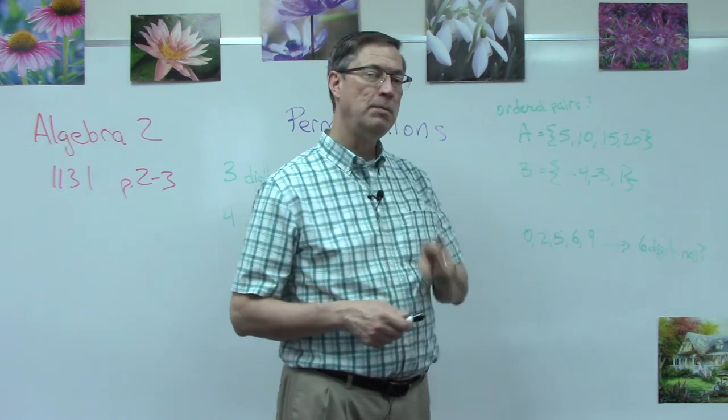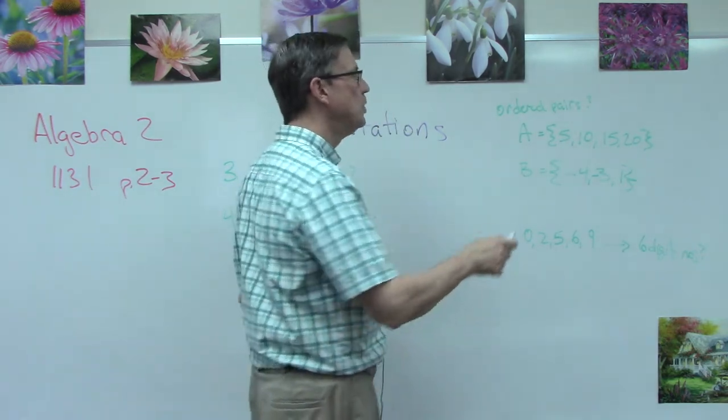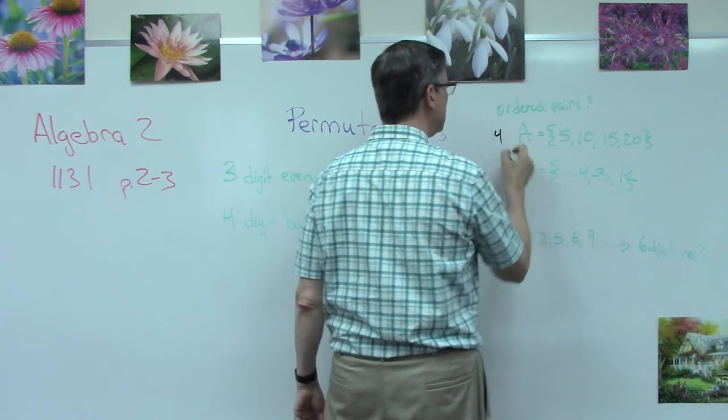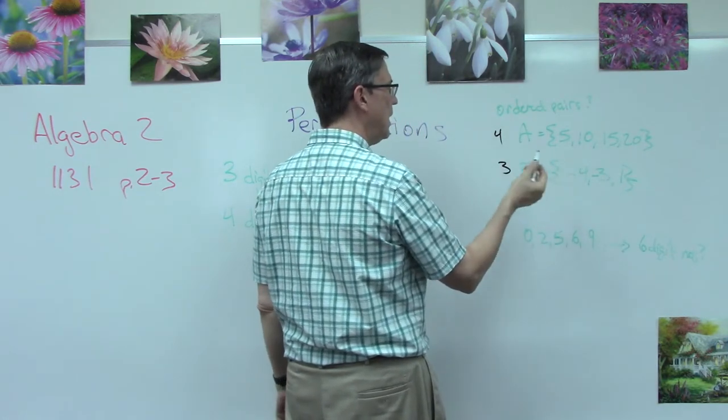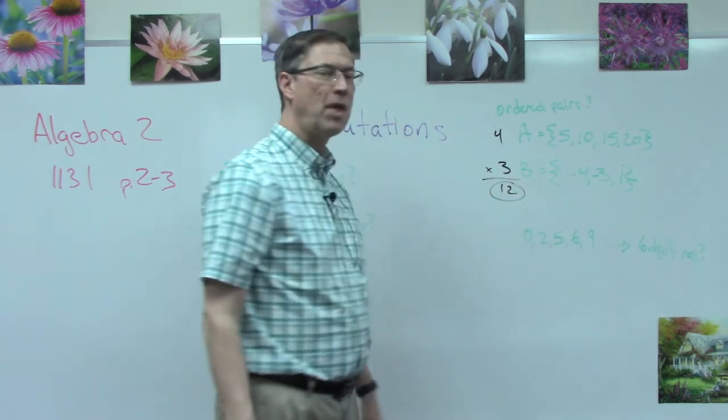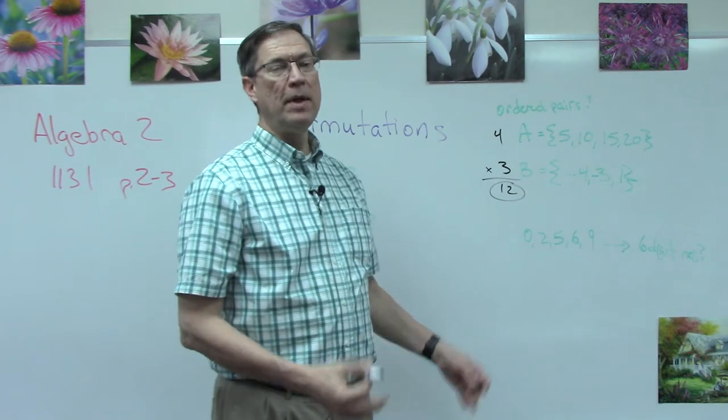When we are doing ordered pairs, trying to find ways that these numbers combine to make a set of two, we just count: one two three four, I have four in this set. I have one two three elements in this set, and so we're just going to multiply them together and get 12. It's that easy.